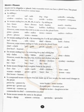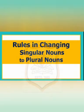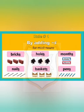Let's have a look at page number 5 — Noun Numbers. Rules in changing singular nouns to plural nouns. Rule number 1: by adding S for most nouns. For example, brick — bricks, hole — holes, month — months, and so on.